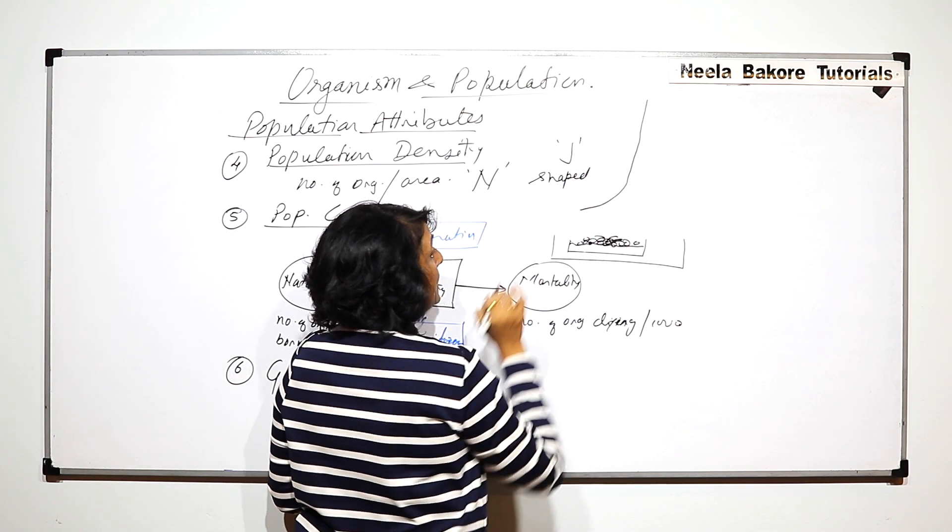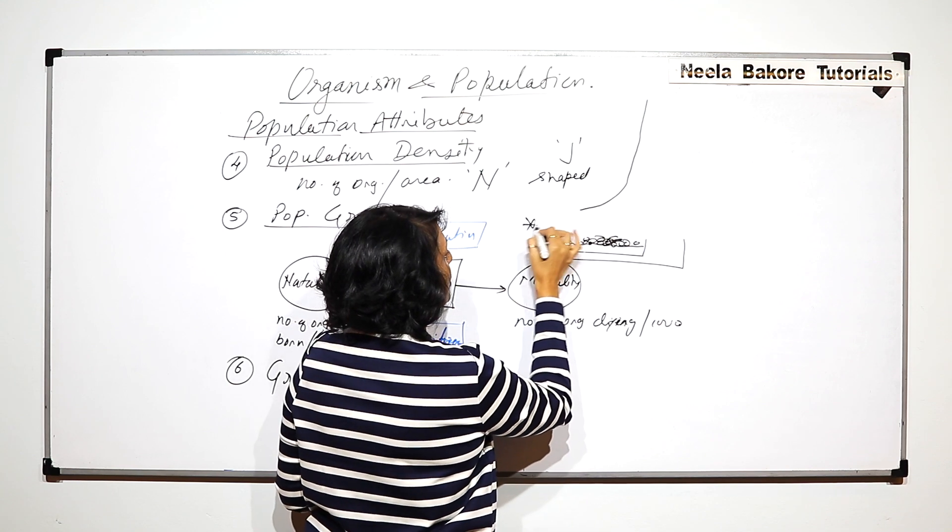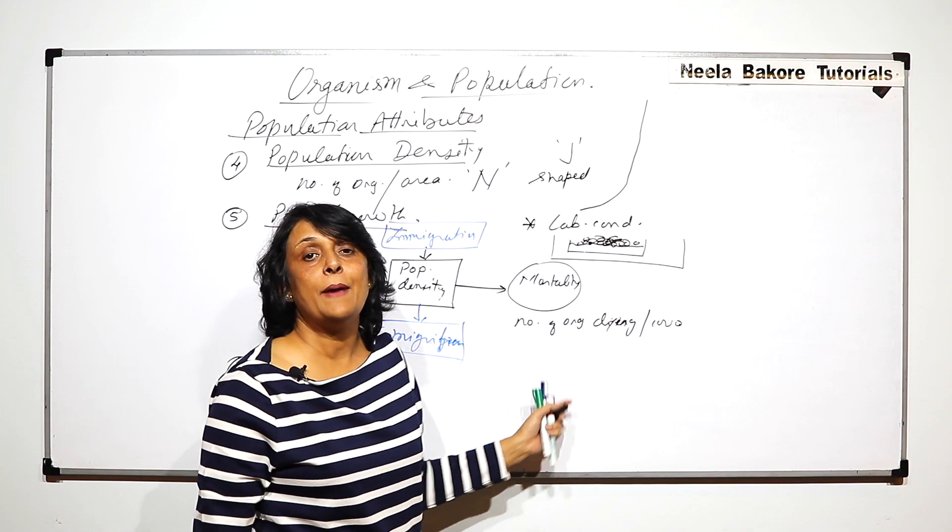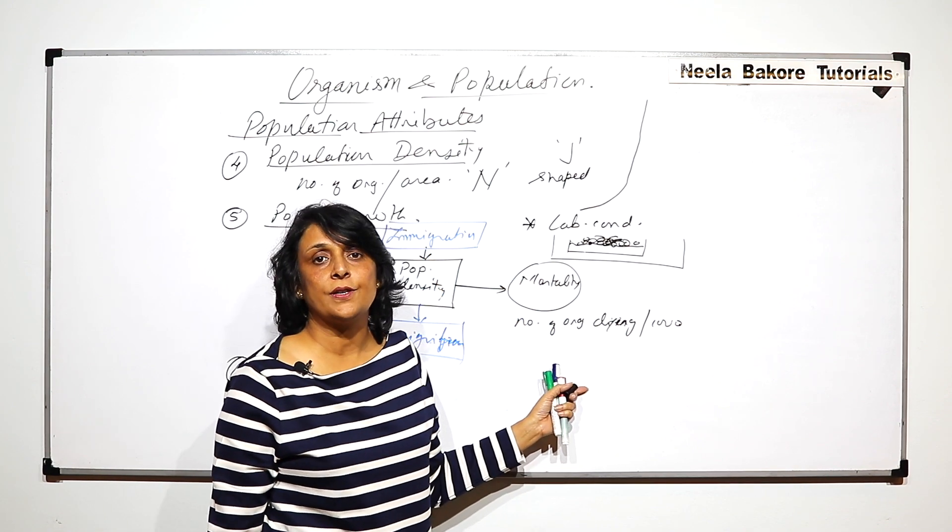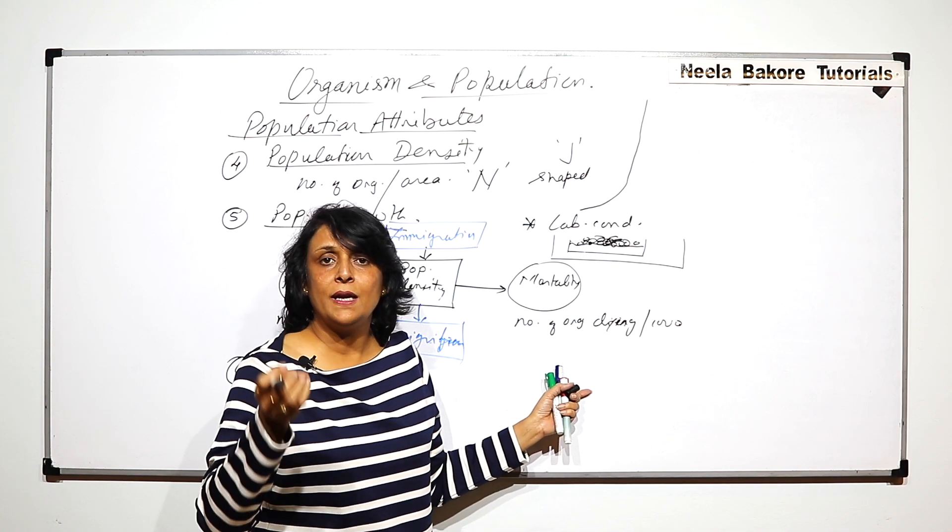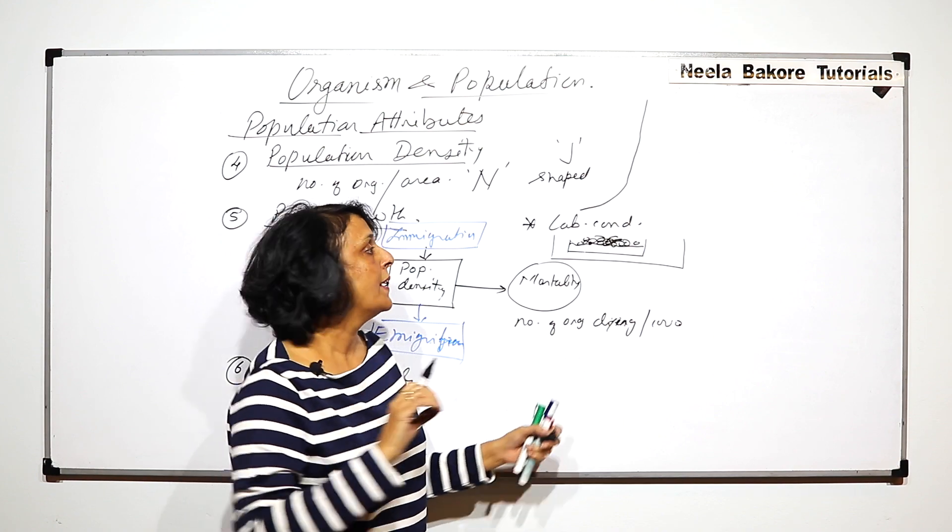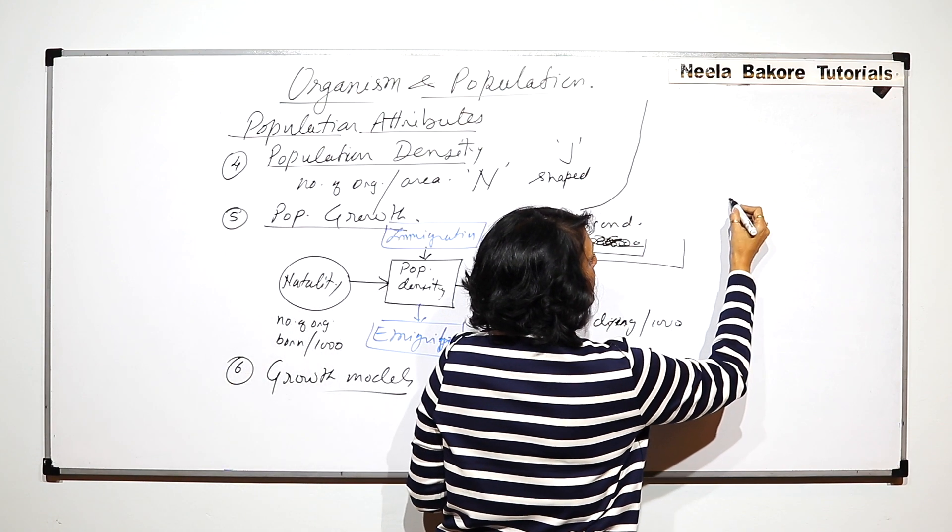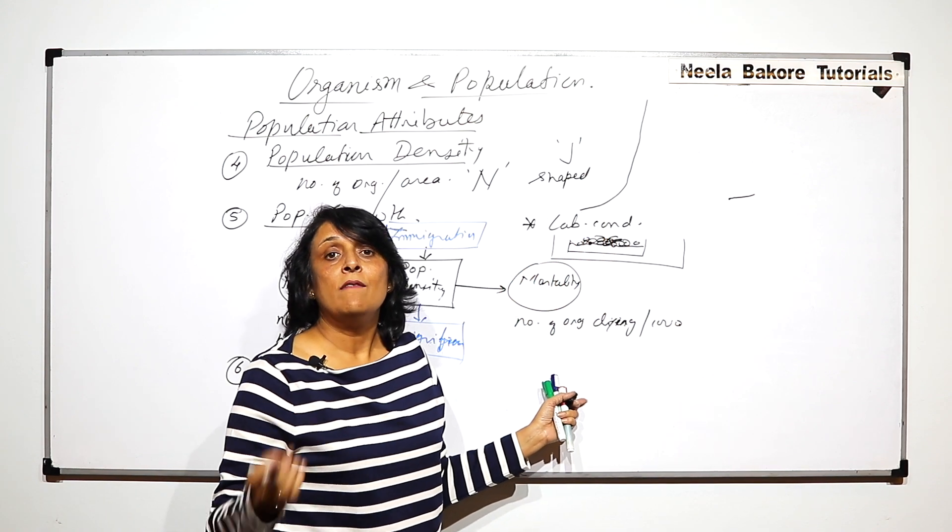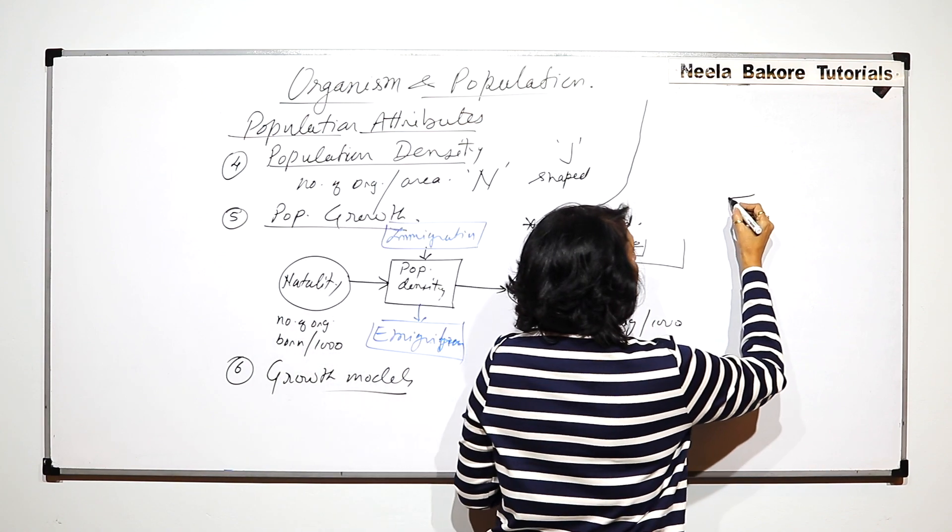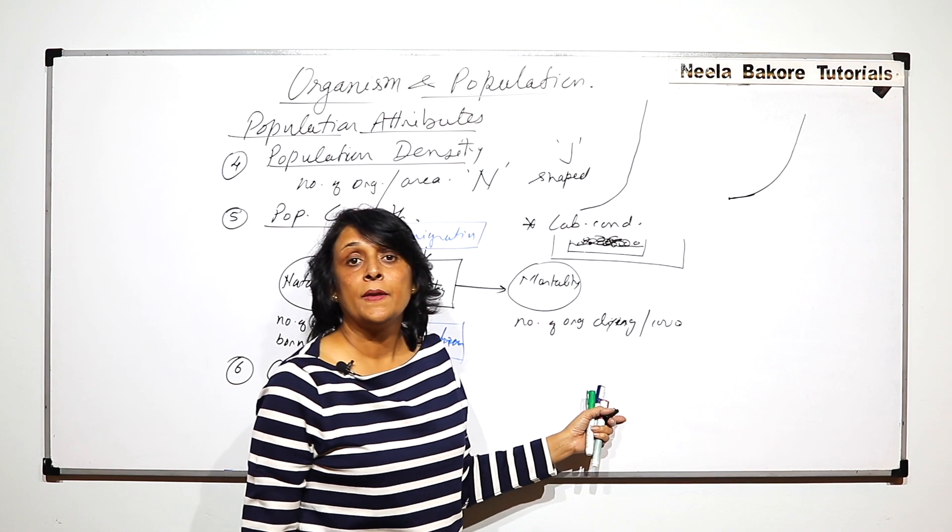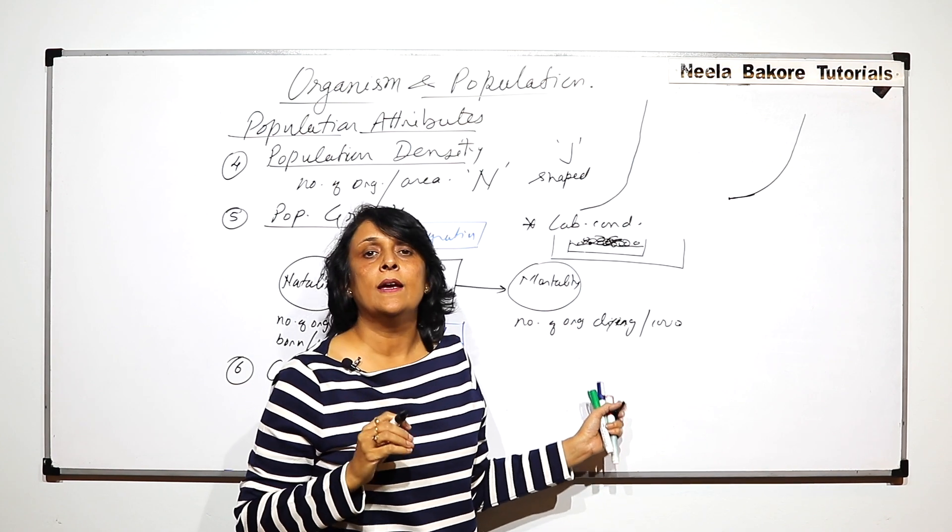This is possible only in lab conditions where we provide them everything. This is not the case in nature. In nature, when organisms start inhabiting a particular place, they come to that place, start living there, adapt to those conditions. Once they get adapted to those conditions, their number is going to increase so this line goes up.